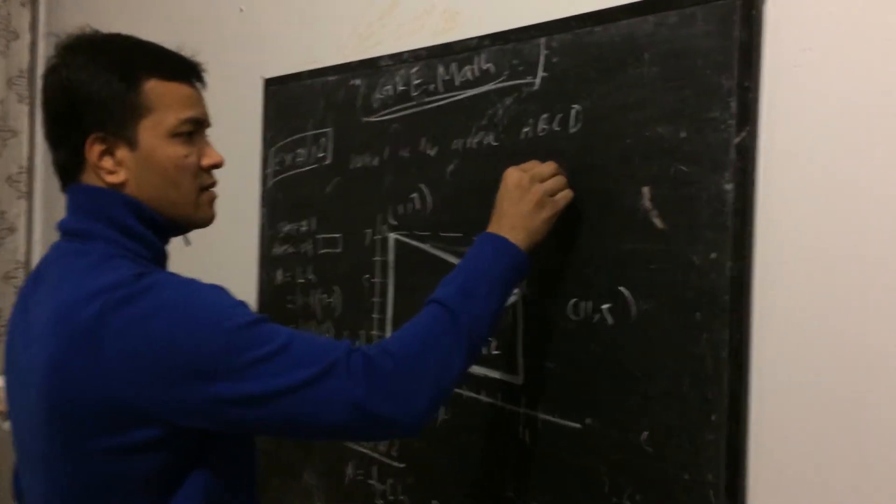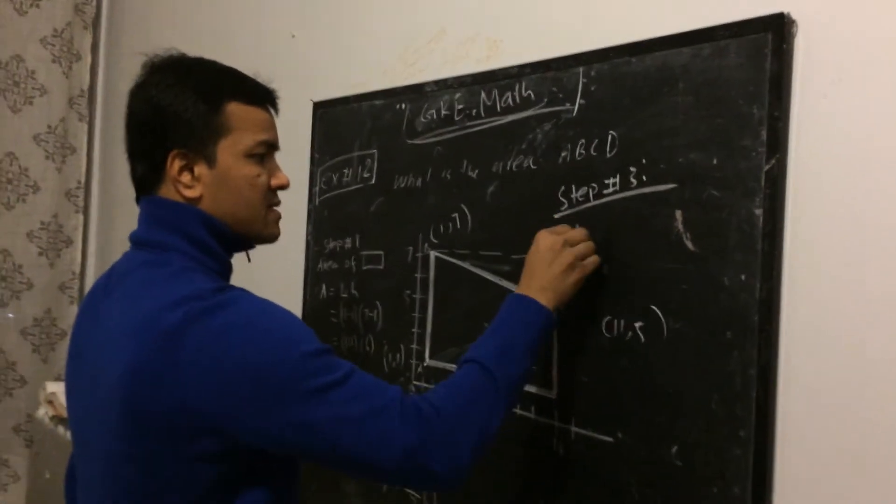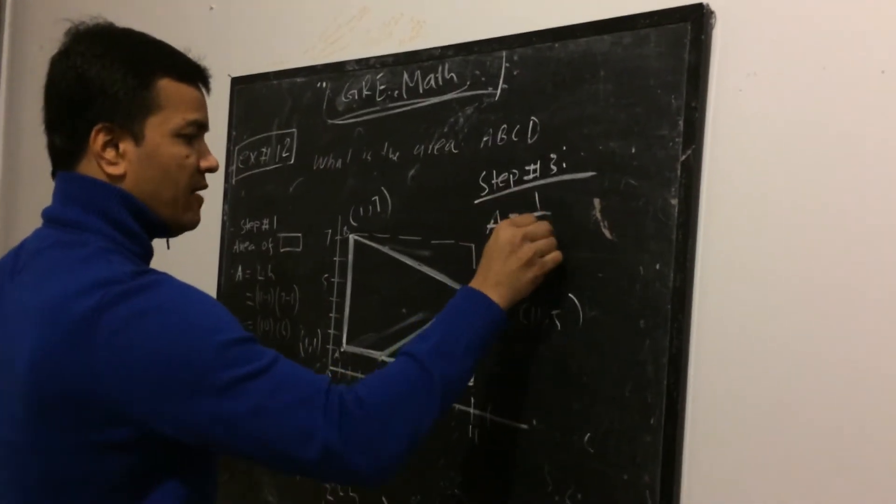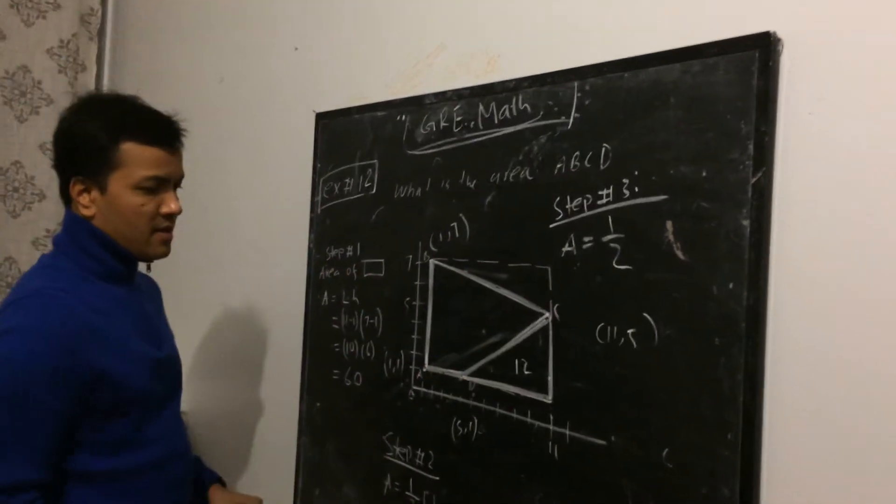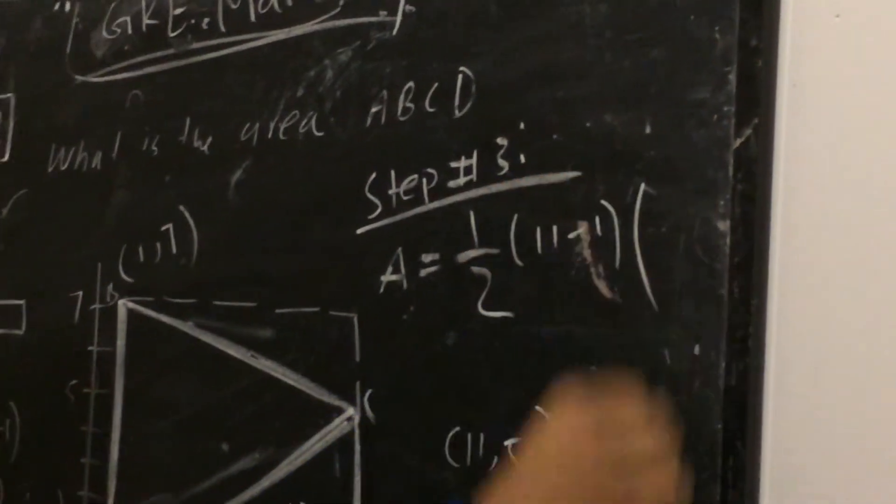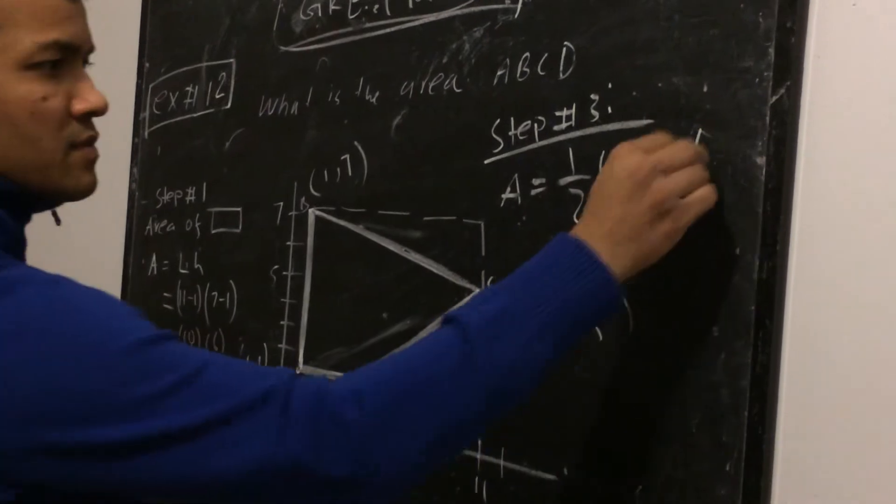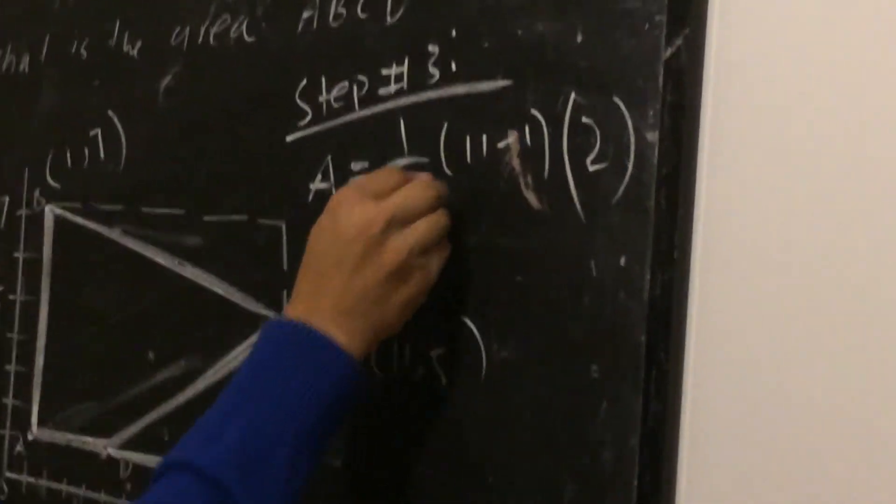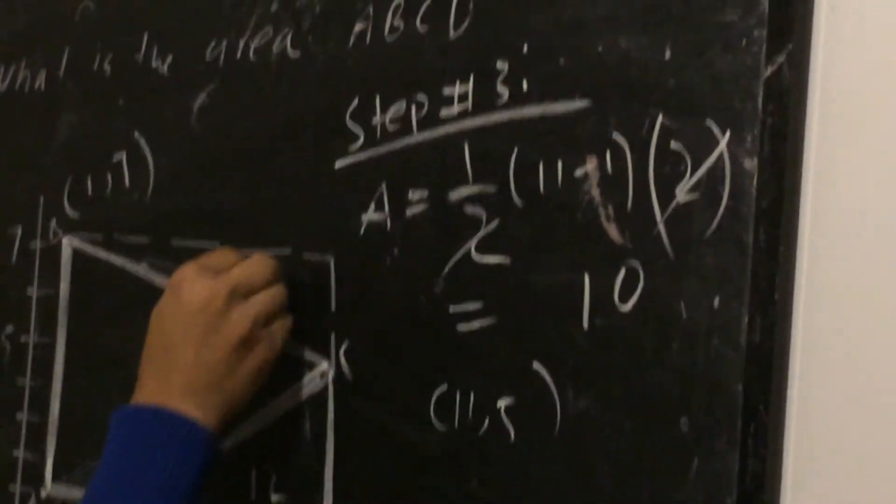Area of this piece is half, plus the length. The length is 11 minus 1. 11 minus 1. And then the height is simply 2. So 2, 2 cancel. 11 minus 1 is 10. Okay, so this is 10.